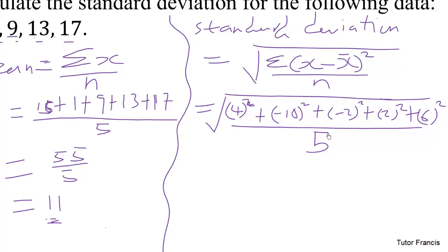So we need to simplify this. 4 squared is 16, 10 squared is 100, negative 10 squared, and negative 2 squared is 4. Then 2 squared is 4, and 6 squared is 36.